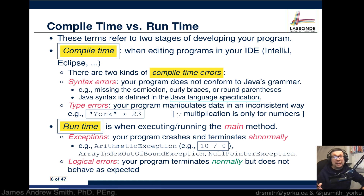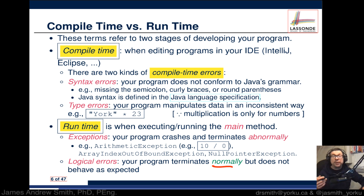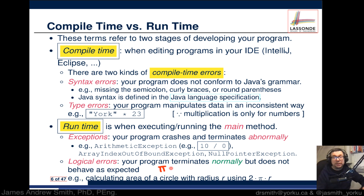There are also logical errors, which are similar to type errors but happen during runtime. Your program terminates normally — it doesn't crash — but it doesn't behave as expected. A particular example: if you're calculating the area of a circle using pi times r squared, but you accidentally write 2 times pi times r, your program runs fine but gives the wrong answer. The logic behind that equation is wrong.